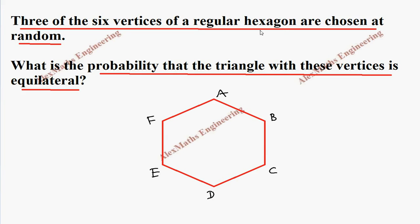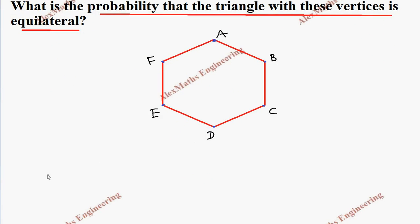So, from these 6 vertices, if I choose any 3 points, we can form a triangle. Total number of triangles formed is, from the 6, we choose 3 at a time.